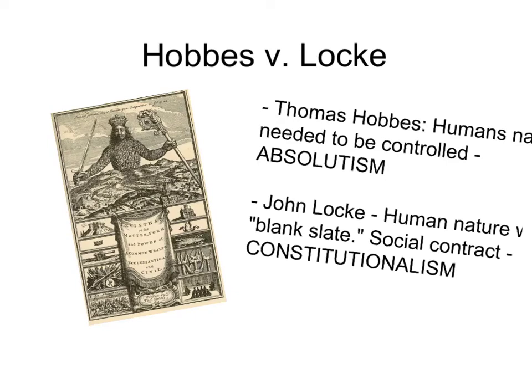Thomas Hobbes, who wrote in the period after the English Civil War and saw the chaos and devastation of it, argued that human nature needed to be controlled — that humans were naturally animalistic. Therefore he advocated a type of government that was very strong, pushing more towards the ideas of absolutism: a government under one king or ruler who had complete control over the country.